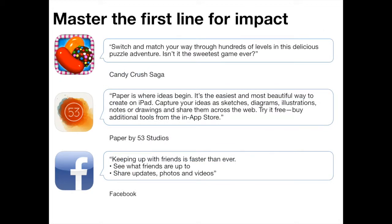Continuing with mastering the first line: this is the thing that snares people. If people only see one line of your app, you need to make sure they understand what your app does, what message you're trying to get across, and why they should download it. Candy Crush Saga's first line — 'Switch and match your way through hundreds of levels in this delicious puzzle adventure — isn't it the sweetest game ever?' — uses a playful tone that captures the casual spirit of the game.